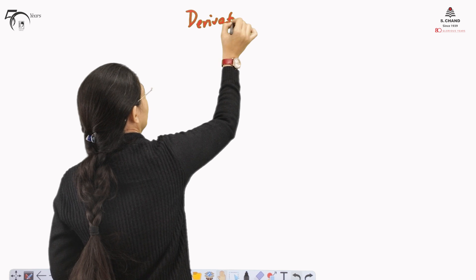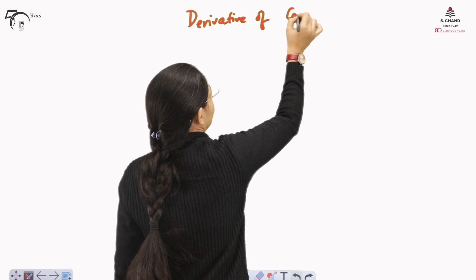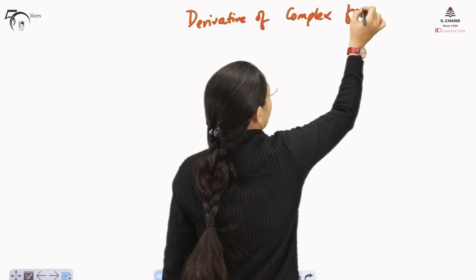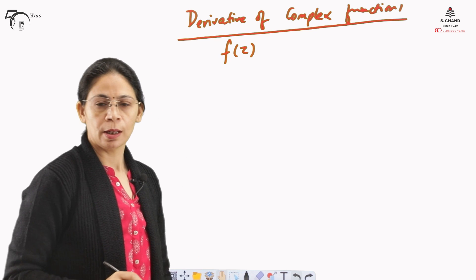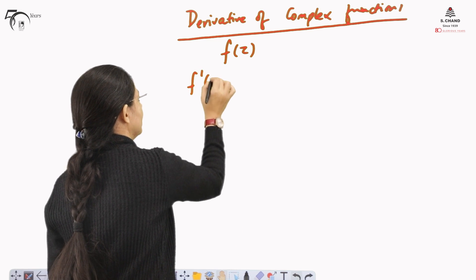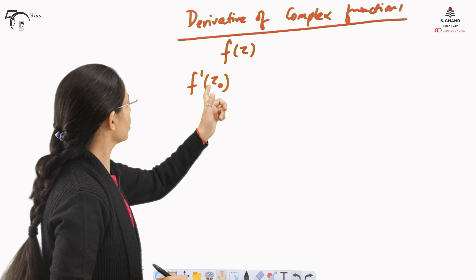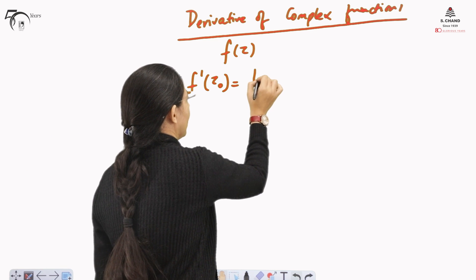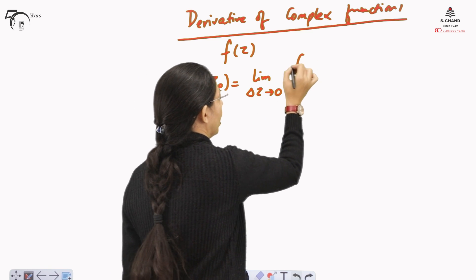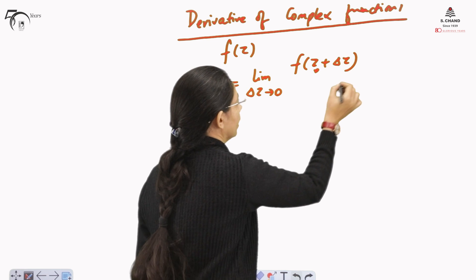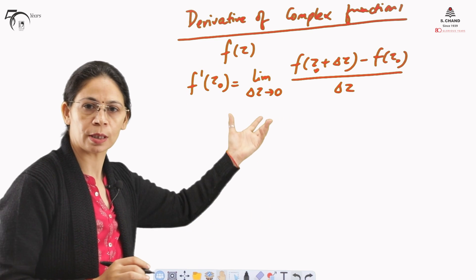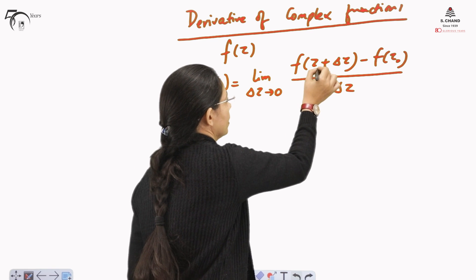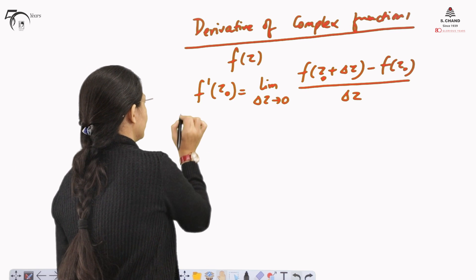Now we will study the derivative of a complex function. We will find out the derivative at some point z₀. The derivative of a complex function f(z), represented as f'(z₀), can be written as: the limit of δz tending to 0 of [f(z₀ + δz) − f(z₀)] divided by δz, provided the limit exists. If this limit exists, then f(z) is said to be differentiable.